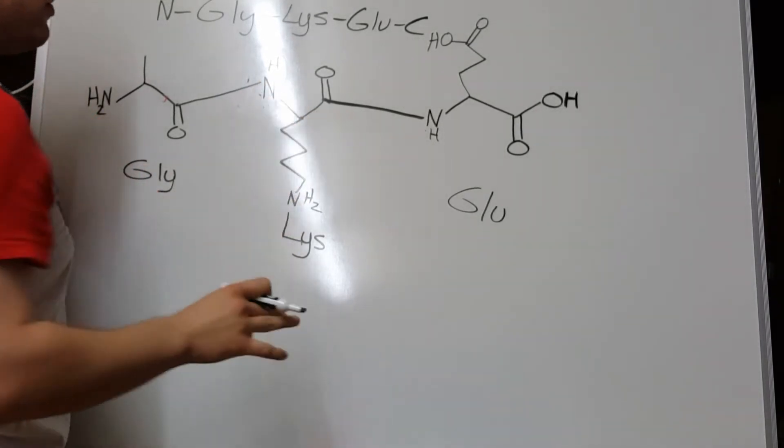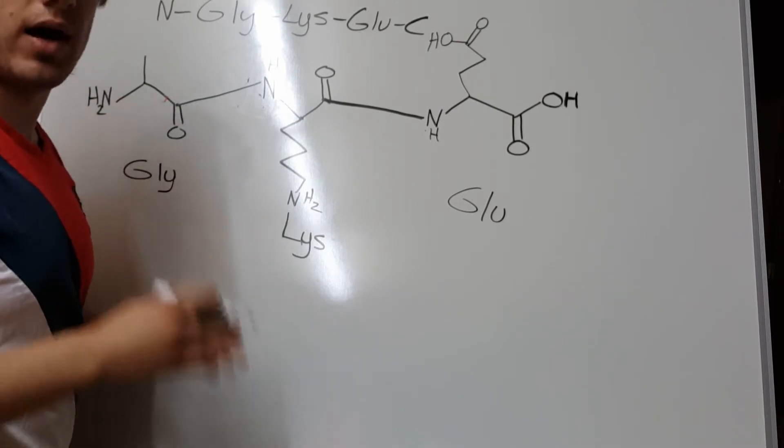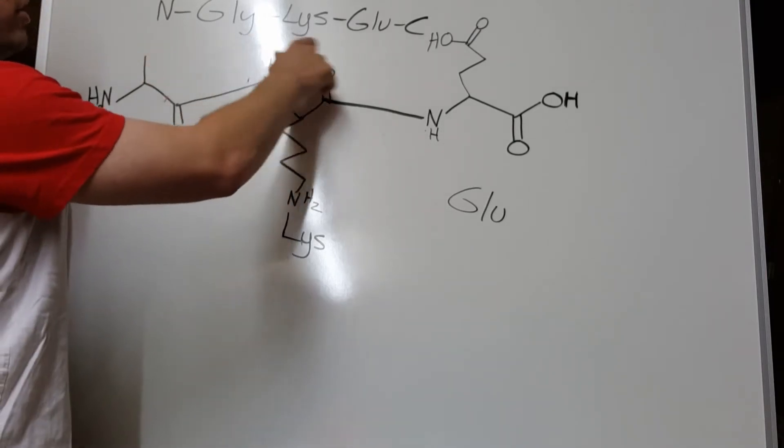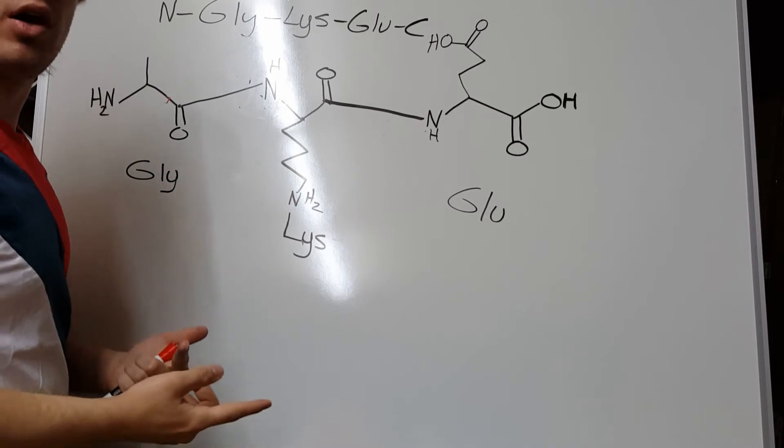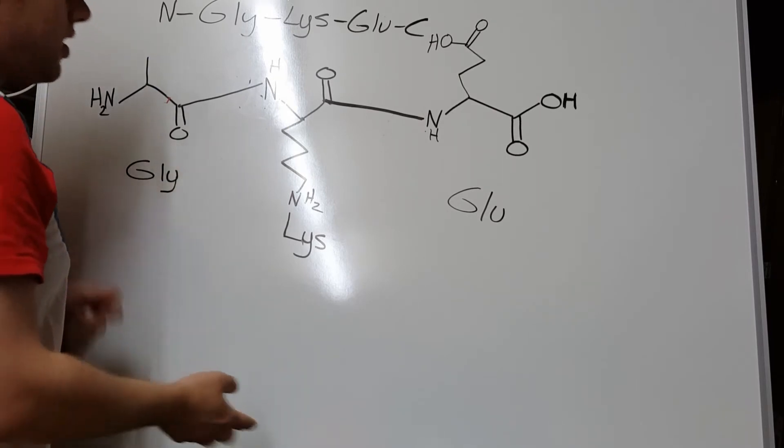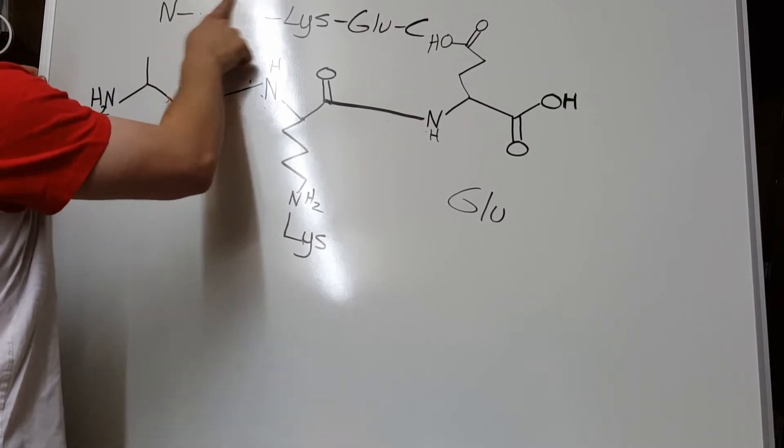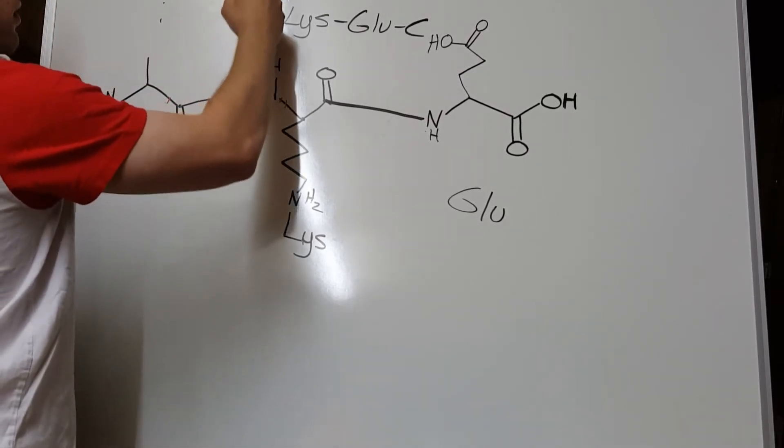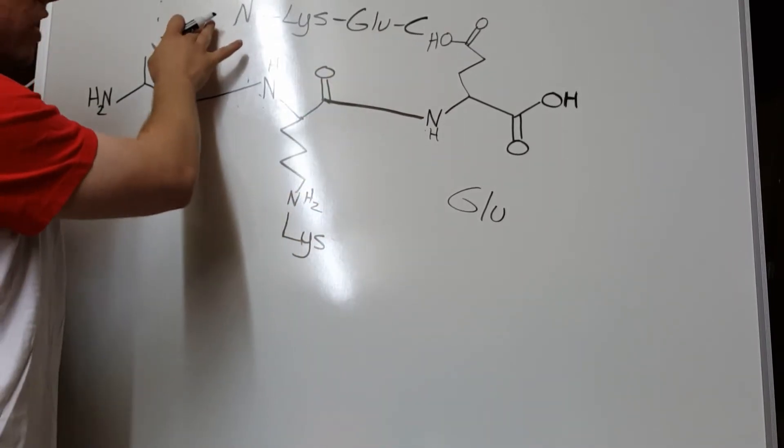Now, the way the Edman degradation works is you chop off the N-terminus amino acid of a polypeptide. So, very often the multiple choice question will just say, here is your amino acid's name. What would you get after a single treatment of an Edman degradation? And so all you have to do is find the answer where the first amino acid has been removed. So, in this case, it would be lysine-glutamate. And if we did a second Edman degradation, then the lysine would get chopped off.